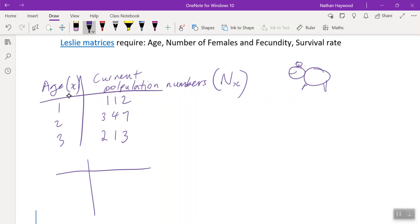Next, we need survival rates. So age again, survival. So this is the survival rate for the next year. 70% of the one year olds will be alive next year. 80% of the two year olds will be alive next year.